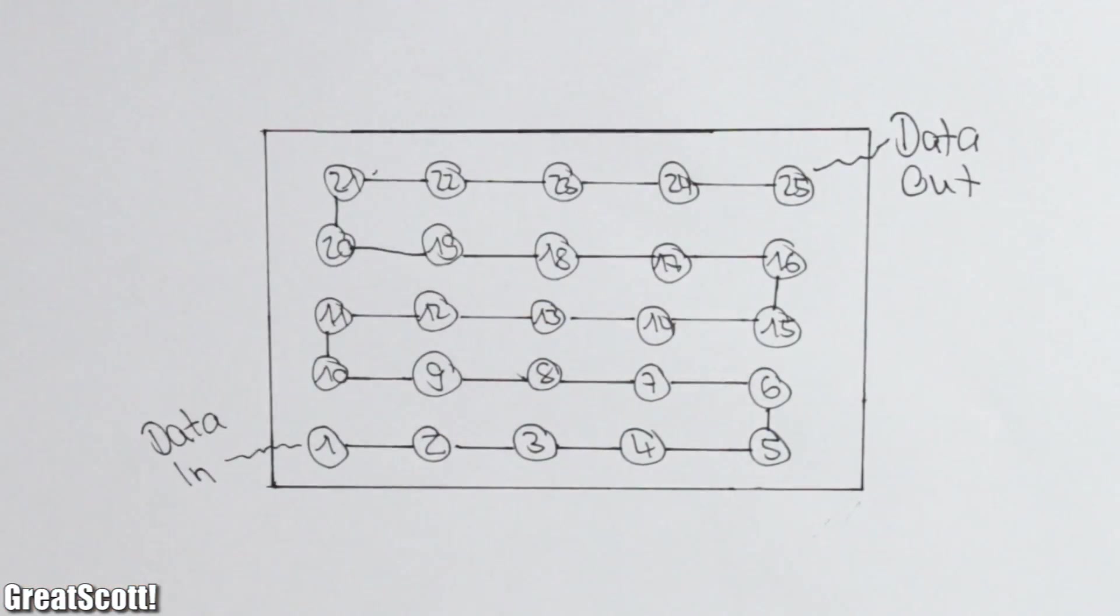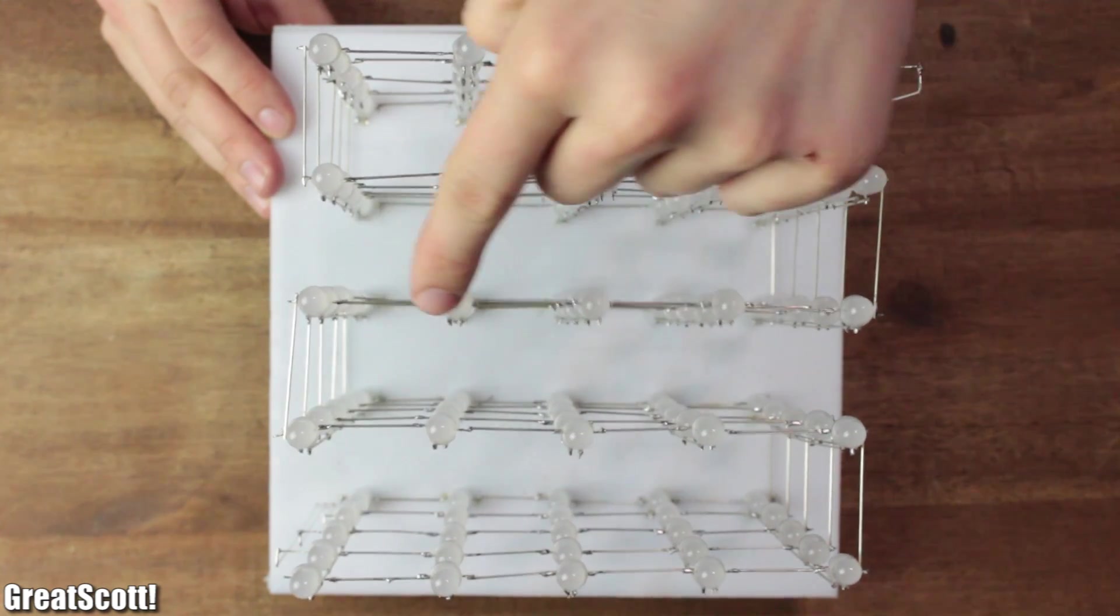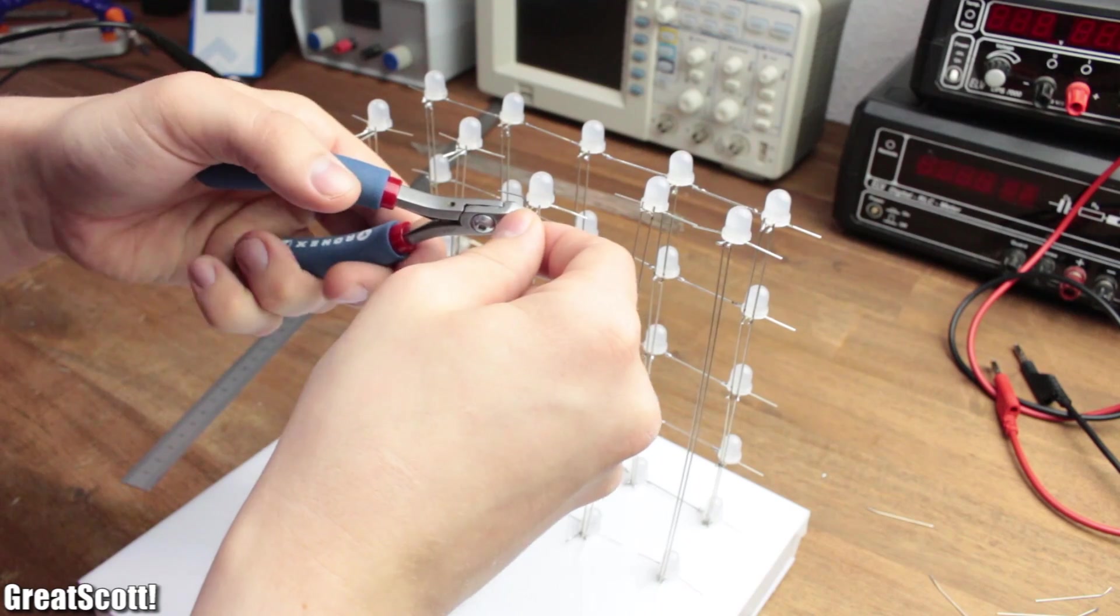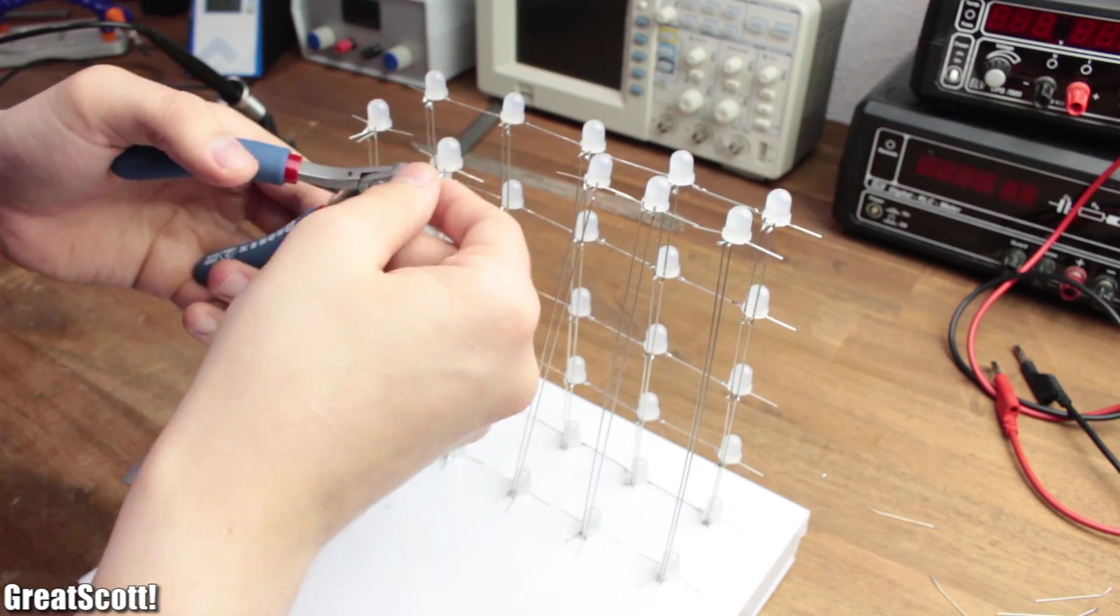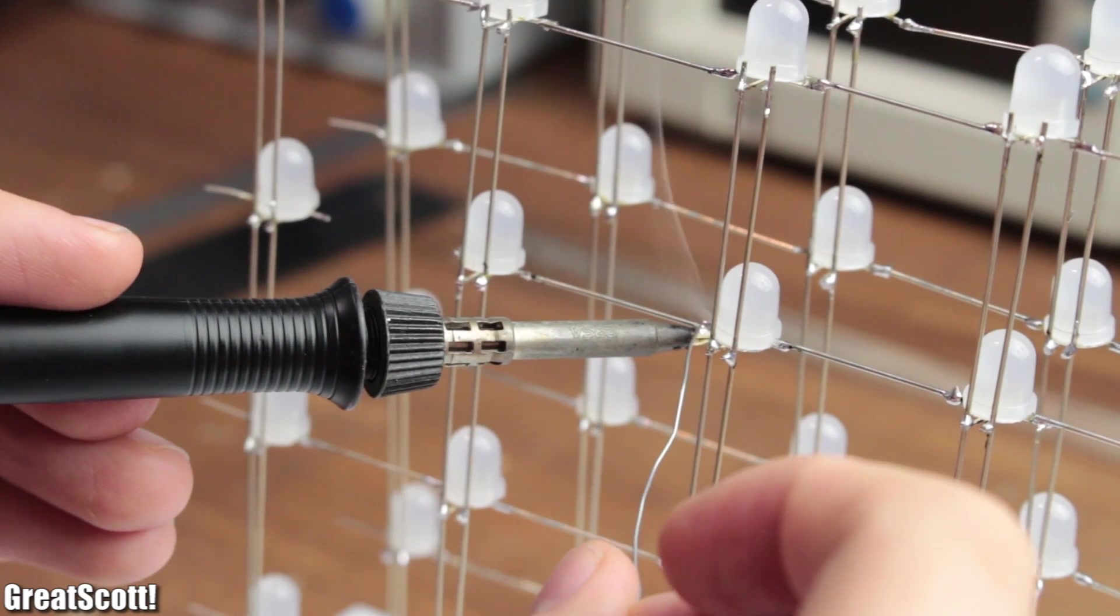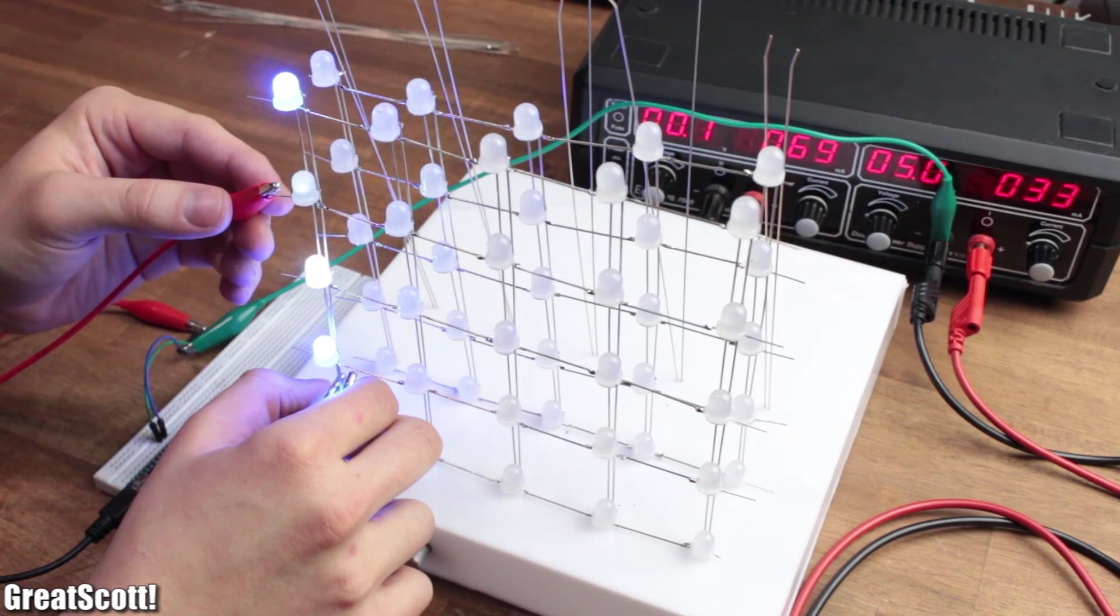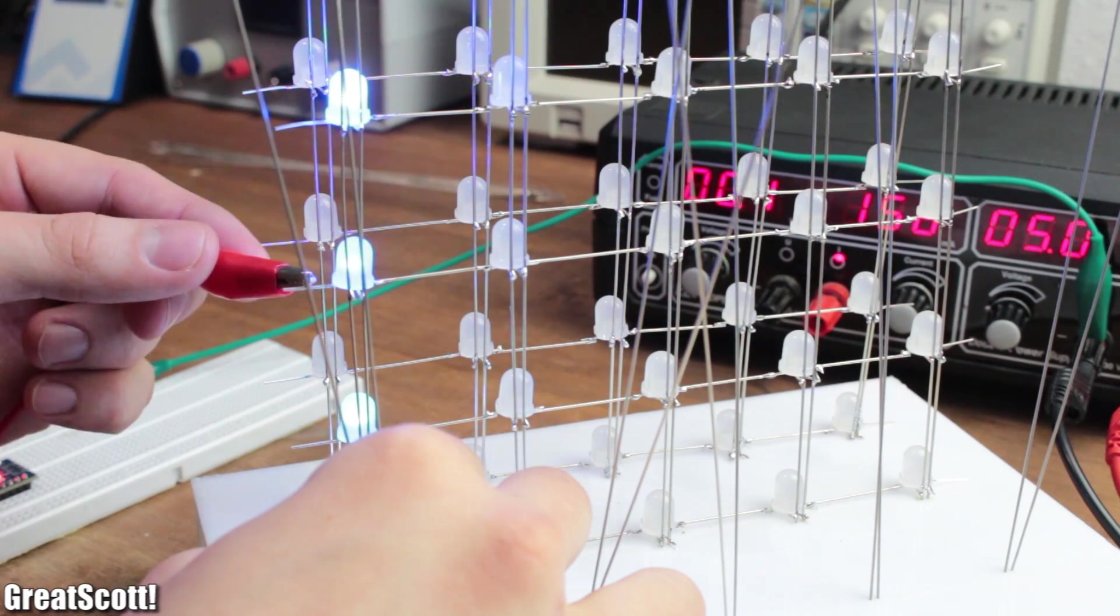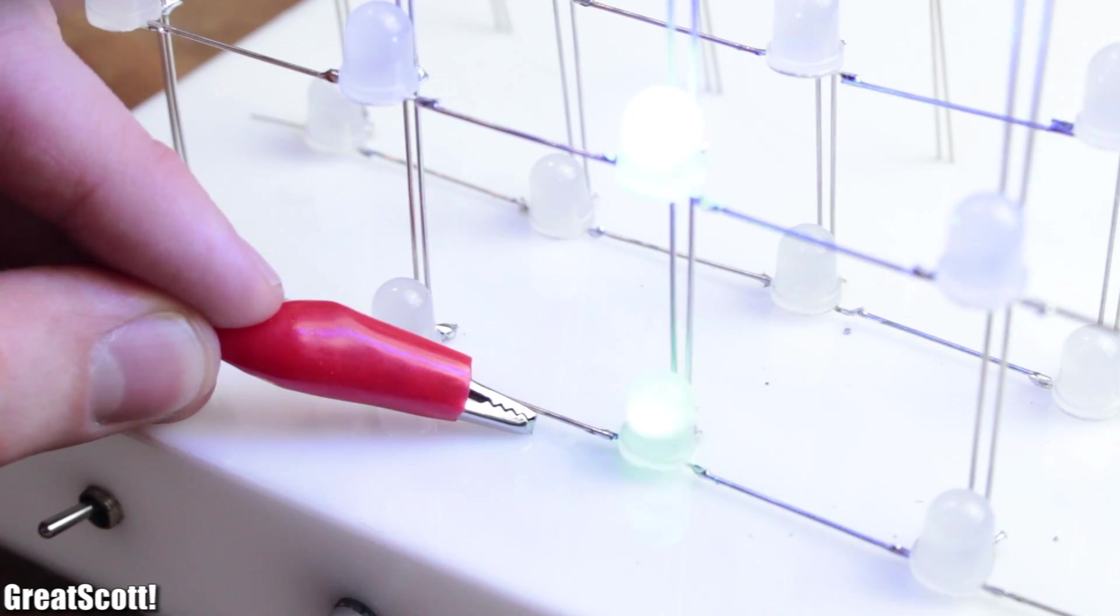This way we can easily connect the data pins together in a snake pattern later on, without the need of any construction troubles. But aside from this orientation shift of the LEDs, nothing else changes for the build of this cube segment. Before I started the third wall, I also tested the LEDs with the help of a data signal just to make sure that everything still works fine.